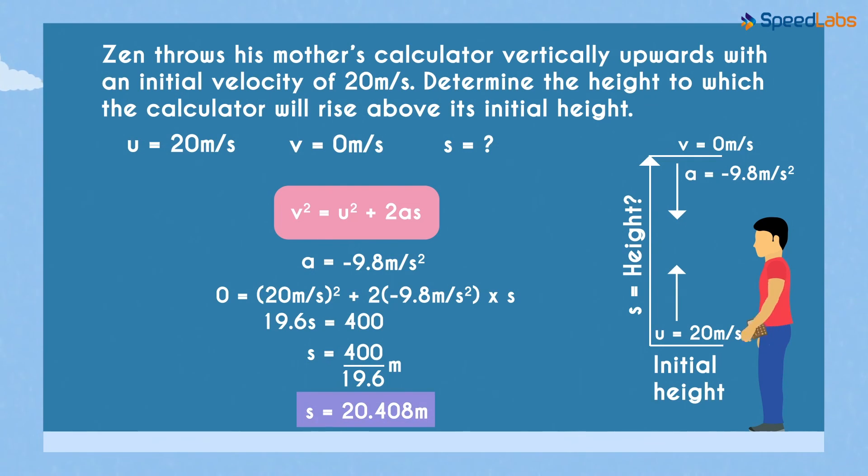This is the height to which the calculator reached before it began its descent. And this height is from the point at which Zen threw his calculator, not from the ground.